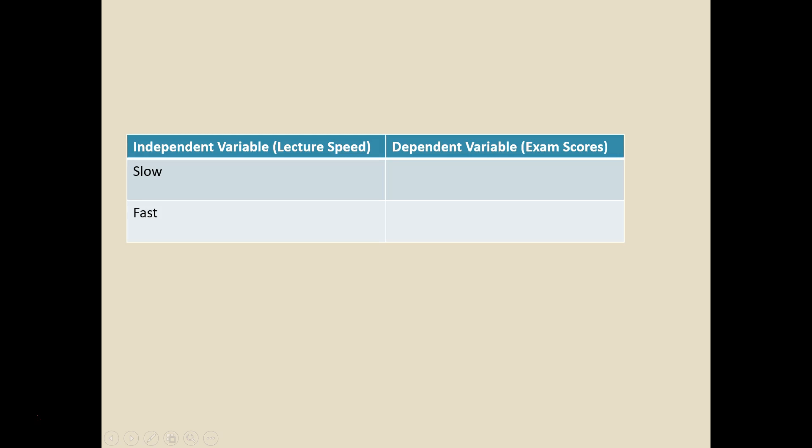So here's our experiment. We've got the independent variable is lecture speed. And there's two versions of that independent variable, slow speed and fast speed. And we're going to measure the average exam scores for students in both of those classes.